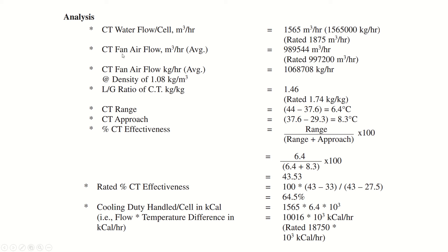The cooling tower fan air flow of 98,954 m³/hr is multiplied by the air density of 1.08 kg/m³ to get the air flow rate as 1,068,708 kg/hr. The L/G ratio is the ratio between water flow rate and air flow rate. Dividing these two flow rates gives an L/G ratio of 1.46.